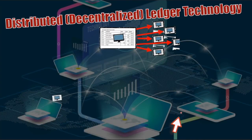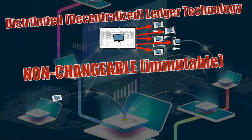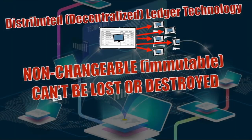Distributed or decentralized ledger technology is pretty simple. We have a ledger going around through all different nodes and computers. It is non-changeable, or immutable, because when you have it across all different types of computers and nodes like Bitcoin, that blockchain verifies all the transactions across each and every one of those nodes. You can't change anything if thousands upon thousands of people have it. Also, it can't be lost or destroyed because you have multiple different nodes throughout everywhere — very tough to destroy thousands upon thousands of nodes.